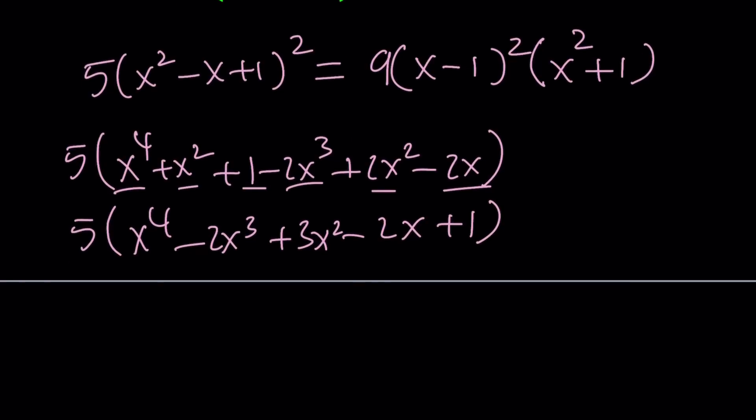When I distribute I'm going to get 5x to the fourth minus 10x cubed plus 15x squared minus 10x plus 5. That's the left hand side.